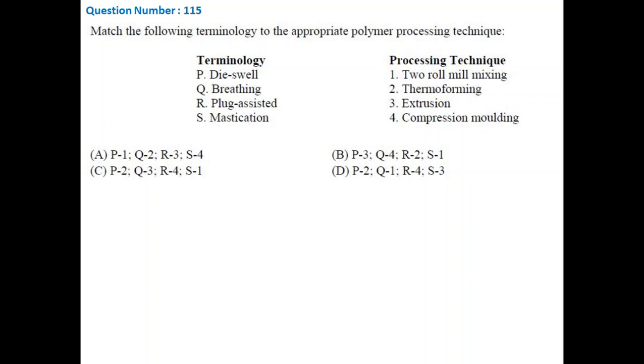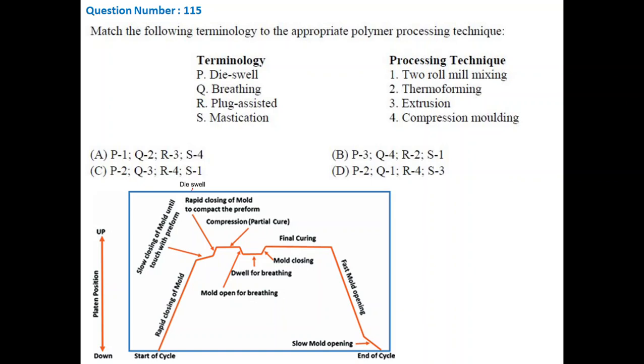In this question, we have to match the phenomena or step with polymer processing method. The first option is die swell. Die swell is a phenomenon in which polymer melt expands when it comes out of a die. The phenomenon is most common in extrusion. Therefore, while designing a product, the die swell is also considered. Similarly, breathing or degassing is a step during compression molding process. Basically, breathing is opening and closing of mold to allow escape of moisture or gaseous additive present in the polymer matrix.